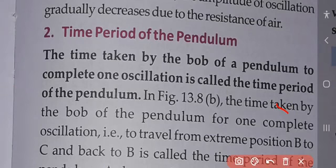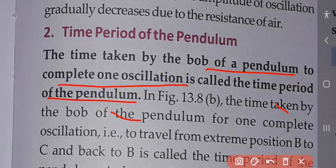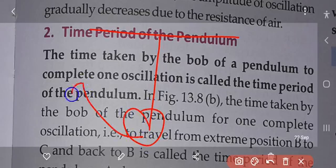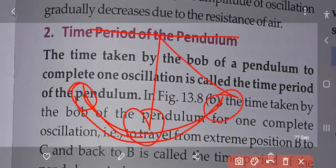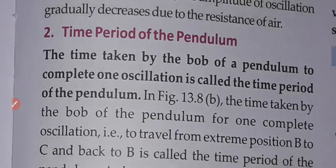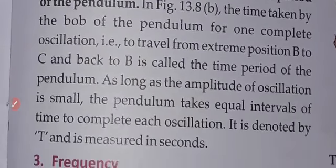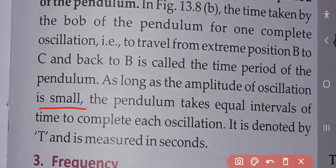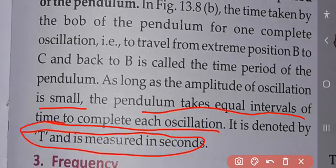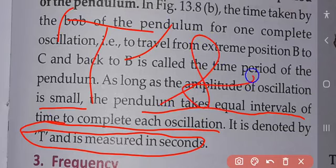Next, the time period of the pendulum. The time taken by the bob of the pendulum to complete one oscillation is called the time period of the pendulum. The bob travels from extreme position B to C and back to B. As long as the amplitude of oscillation is small, the pendulum takes equal intervals of time to complete each oscillation. It is denoted by T and measured in seconds.